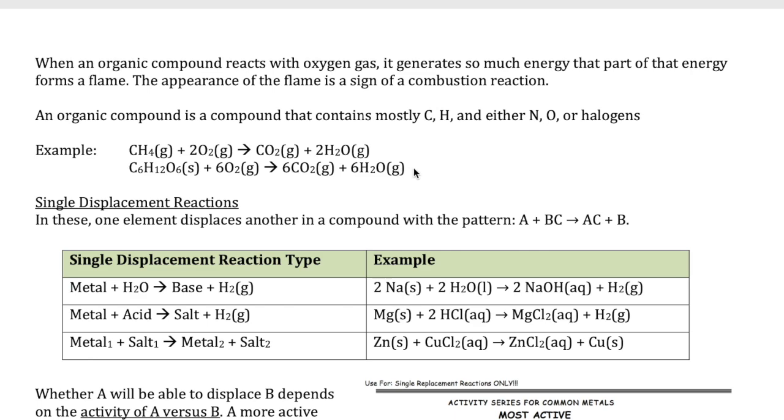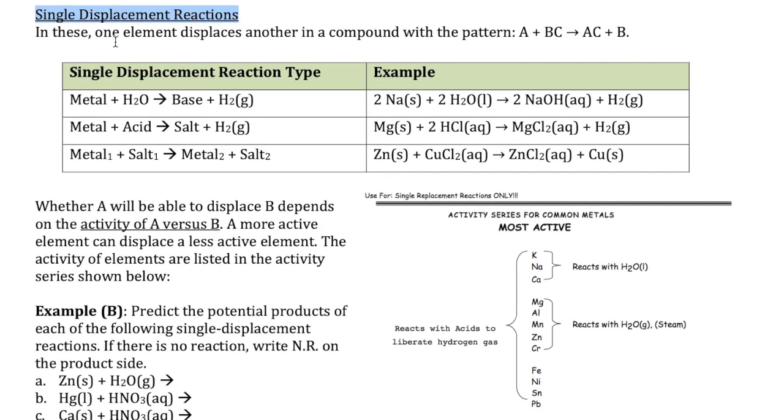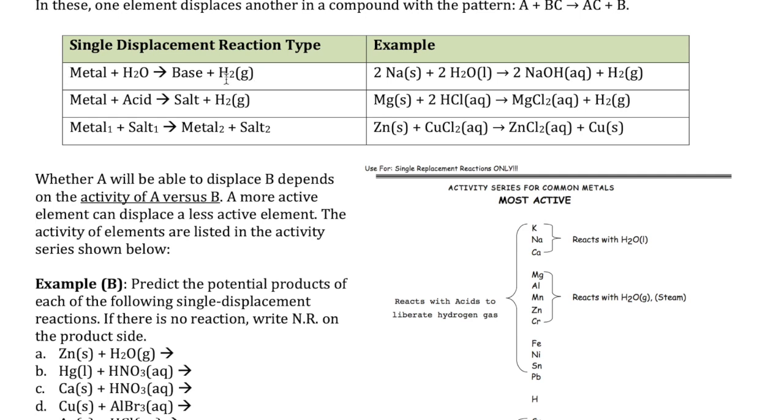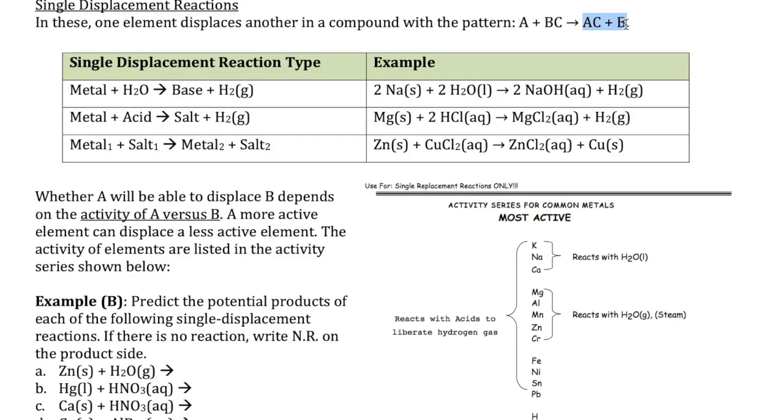Now we're getting to one of the harder reactions in this category, which is single displacement reaction. In this reaction, the pattern is you have an element reacting with an ionic compound, and that element displaces the cation in the ionic compound to form a new ionic compound and a new element. So A plus BC forming AC plus B. There are different types of single displacement reactions which are shown here with their examples. You want to remember this because you want to be able to predict the products that come out of this single displacement reaction. Now, here's the important part. So A plus BC goes to form AC plus B, but not always.